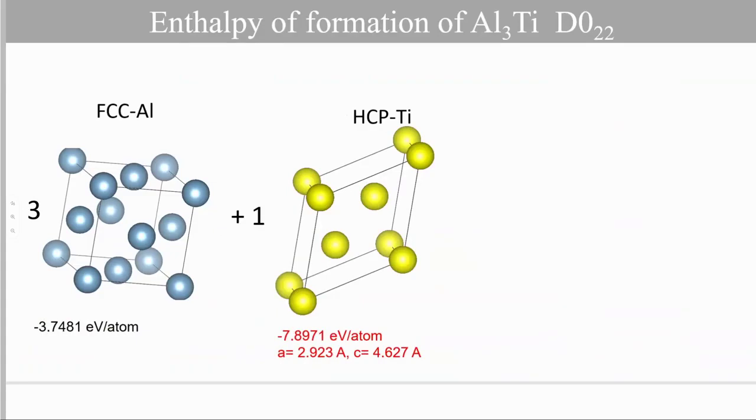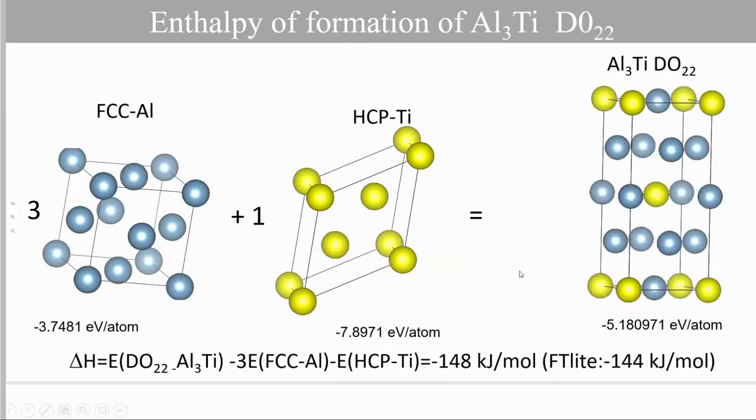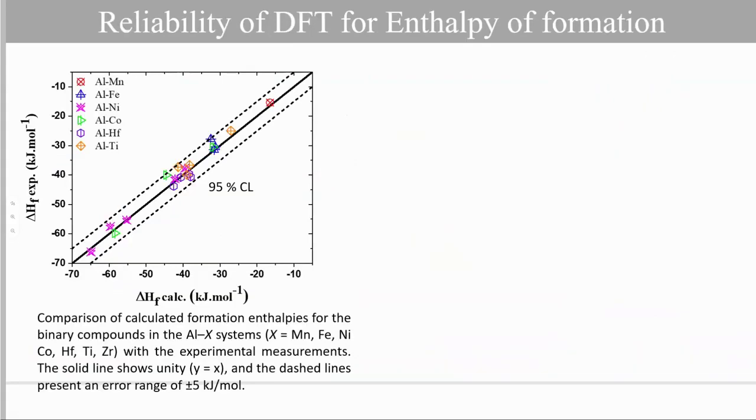And we do exactly the same for HCP titanium, which is the stable structure, and we get the total energy and the equilibrium lattice parameters. And lastly, we do exactly the same calculation for the compound Al3Ti. If the total energy obtained by DFT has no meaning, the exchange in the energy of reaction, which describes the enthalpy of formation, has meaning. The enthalpy of formation is obtained by this reaction energy here. And we can see that the obtained enthalpy of formation is in good agreement with what was first optimized in the FACT-Lite database.